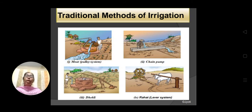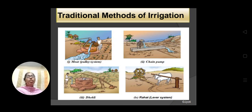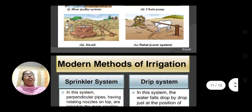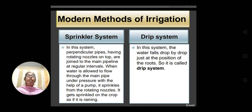These are the traditional methods. But why are we not using them nowadays? There are many disadvantages — they need labor, they take more time. Most importantly, in the present scenario we are facing water scarcity, and in traditional methods there is a huge loss of water. That is why nowadays modern methods of irrigation have emerged. There are two modern methods: one is the sprinkler system, and the other is the drip system.